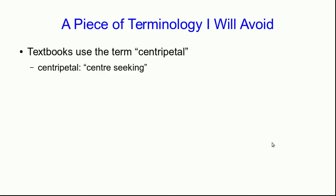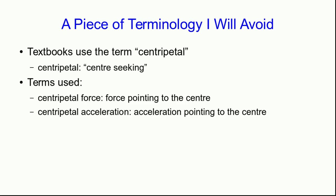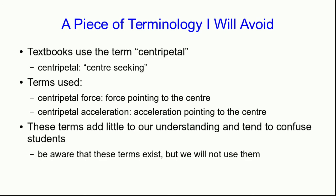I want to point out a word I'm just not going to use because you've probably seen it before and I should explain why I'm not using it. So textbooks use the term centripetal when they're talking about this acceleration to the center. Centripetal just means center seeking. So we say centripetal force when we mean that the force points to the center. Centripetal acceleration means that the acceleration points to the center. Well, these terms really add little to our understanding and they tend to confuse students. Because all we mean is that these are vectors that point to the center. So be aware that these terms exist, but I'm not going to use them because we should perpetually eschew obfuscation.